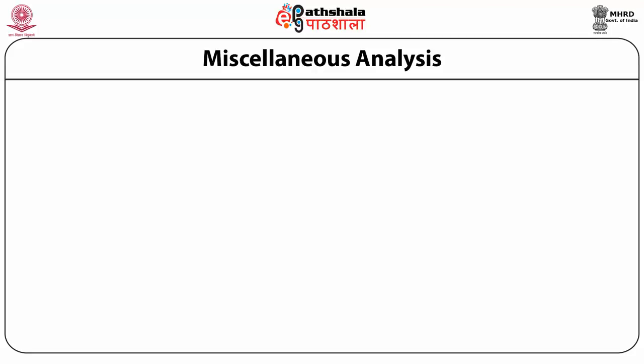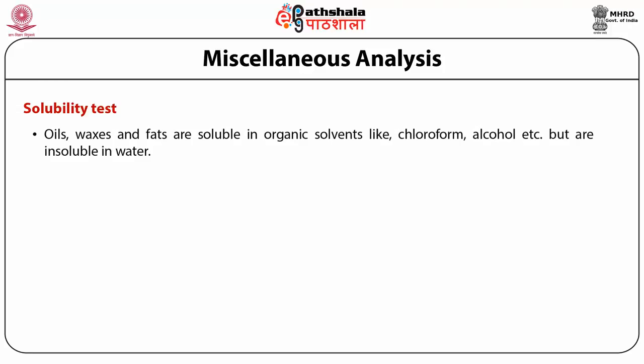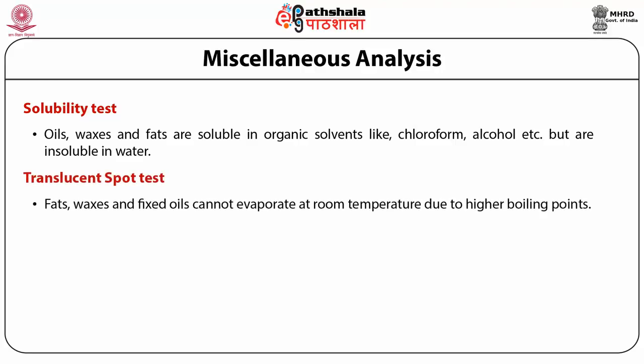Miscellaneous methods for the analysis of fatty acids and waxes: the first test is solubility test — oils, waxes and fats are soluble in organic solvents like chloroform and alcohol but insoluble in water. These solubility patterns are used for preliminary analysis. Another method is the translucent support test — fats, waxes and fixed oils do not evaporate at room temperature due to higher boiling point ranges. When placed on paper they diffract light, which can pass from one side to the other, producing a translucent appearance. This translucency on paper is the basis of the test and is given by fats and fixed oils, in contrast to volatile oils which do not show this.